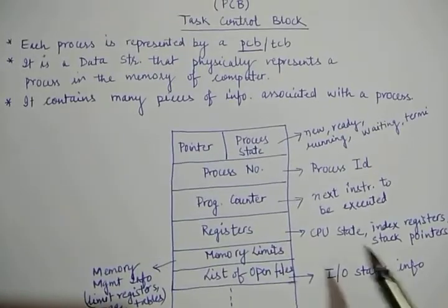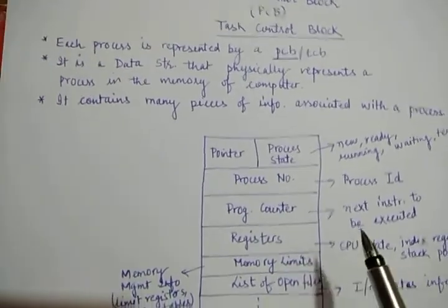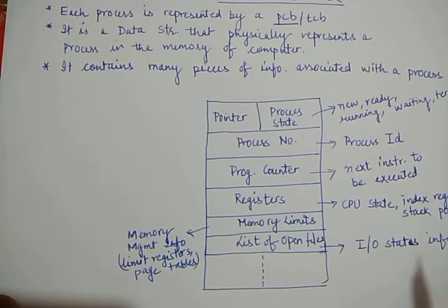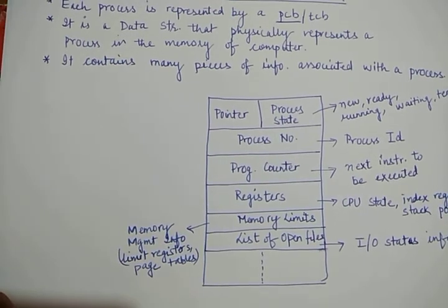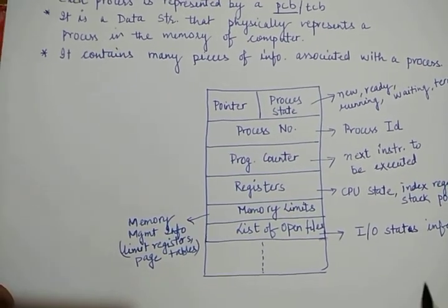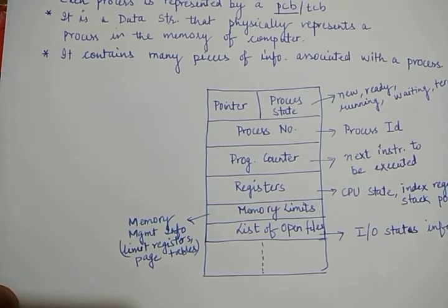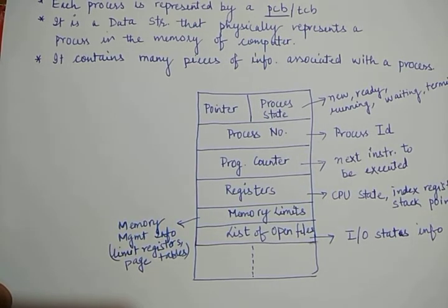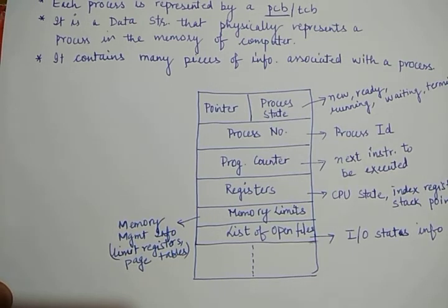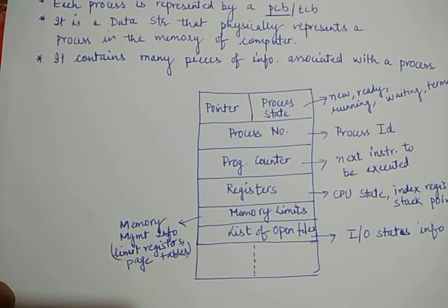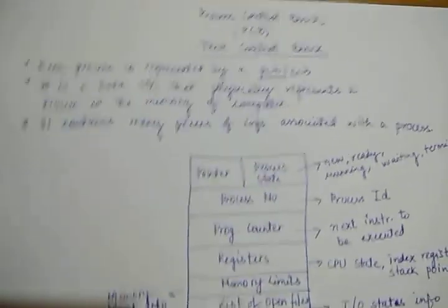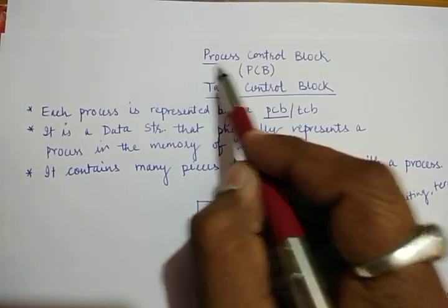By means of this process control block diagram, a process in a computer system is maintained, through which any operating system keeps track of the number of processes it is executing, the number of processes in the waiting state, the number of processes which are finished or terminated, the number of processes which are ready to be executed, their process IDs, their next instructions, their CPU status, and their memory management information. This is how a computer system keeps track of all processes.